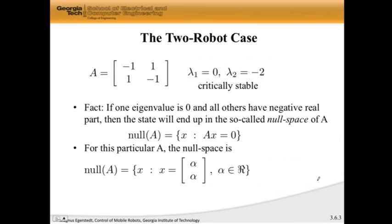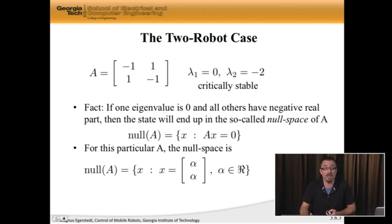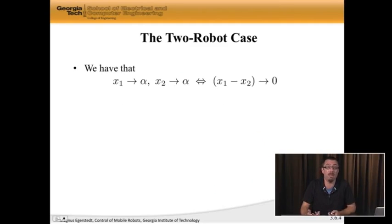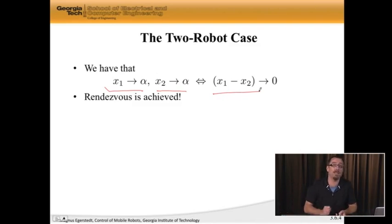Okay, what does this mean for me? Well, it means that x1 is going to go to alpha and x2 is going to go to alpha. x1 goes to alpha, x2 goes to alpha, which means that x1 minus x2 goes to zero, because they go to the same thing, which means that we have, ta-da, achieved rendezvous. They end up on top of each other. In fact, they end up at alpha. We don't know what alpha is, but we know that they end up there.